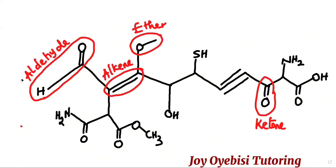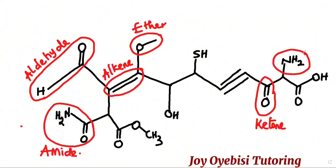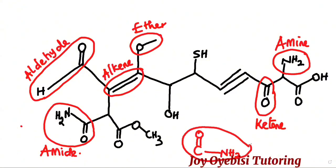Moving on, this one is known as an amide. Before I explain that, this one here is known as an amine. When a carbonyl group — a C double bond O — is connected to an amine, we call that group an amide. So this is an amine and this is an amide.